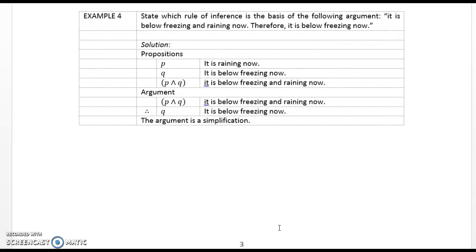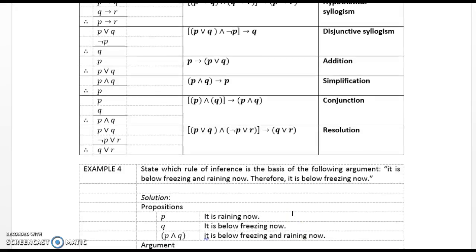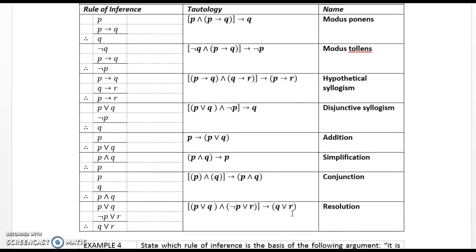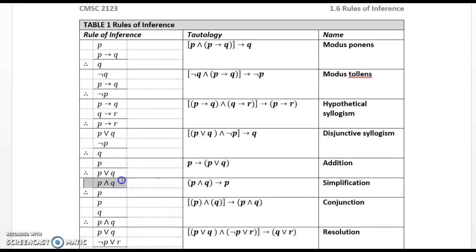Example 4. State which rule of inference is the basis of the following argument: 'It is below freezing and raining now, therefore it is below freezing now.' Propositions: P is 'it is raining now,' Q is 'it is below freezing now.' The argument is P and Q — it is below freezing and raining now — therefore Q: it is below freezing now. The argument is simplification.